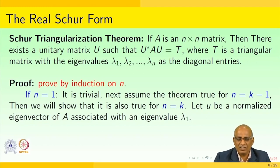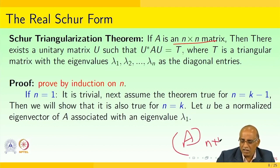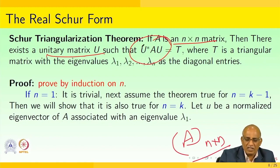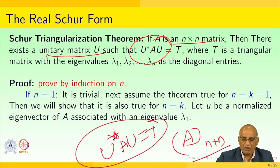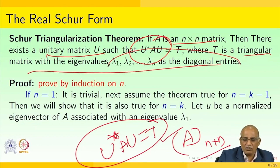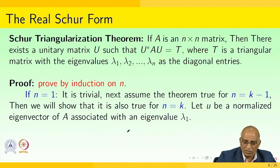The Schur triangular theorem states: if A is an n×n matrix, then there exists a unitary matrix U such that U*AU = T, where U is the unitary matrix. If you find the unitary matrix U such that U*AU = T, then T is a triangular matrix with eigenvalues λ₁, λ₂, ..., λₙ on the diagonal.